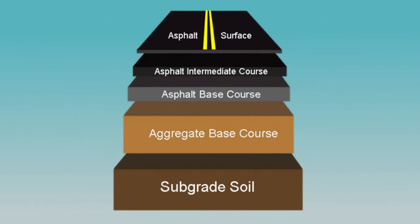A typical roadway is constructed in multiple lifts. The number of lifts is related to the intended use of the structure and certain qualities of the native soils encountered on site. A proper pavement design determines the number of lifts and thickness of each lift to meet or exceed the expected lifetime loading of the structure.